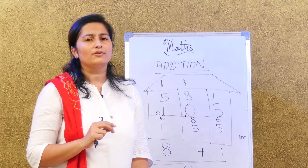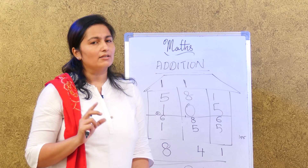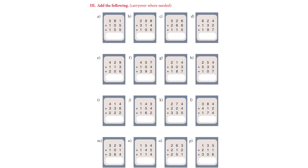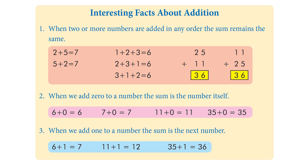Number one: you can use this method to check if your answer is correct. Number two: whichever method is convenient for you, use it to get the addition easily. Now an interesting fact on page number 80: when two or more numbers are added in any order, the sum remains the same. That is the example we just learned — adding all three together, or adding two and then adding the third to the answer. Either way you will get the same answer. Just learn how to add and carry forward.